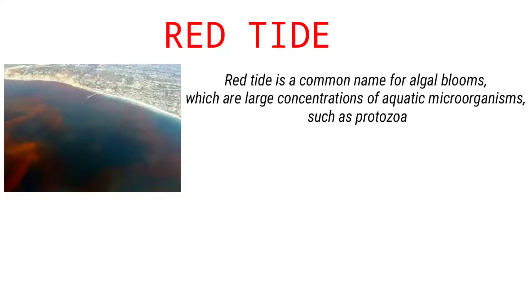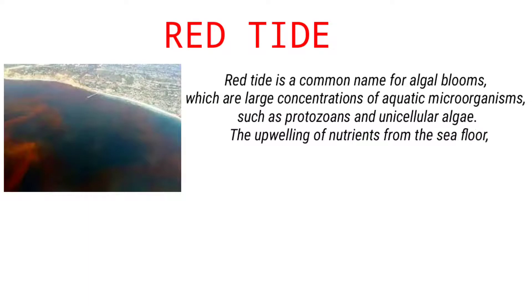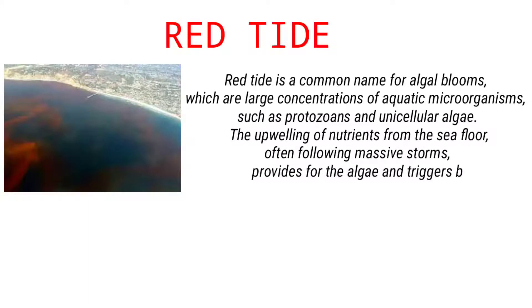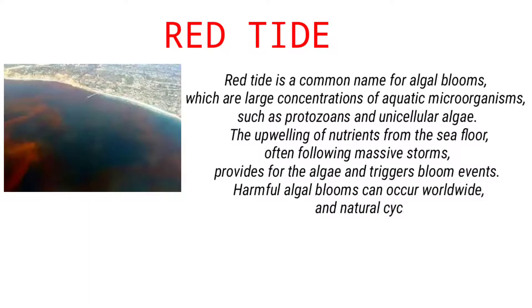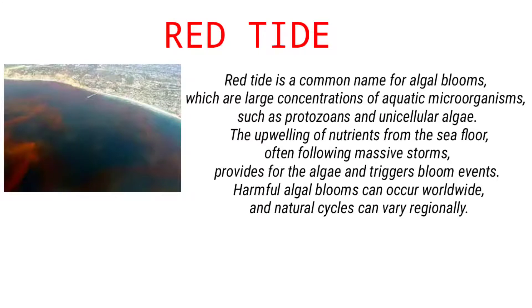The upwelling of nutrients from the seafloor, often following massive storms, provides for the algae and triggers bloom events. Harmful algal blooms can occur worldwide, and natural cycles can vary regionally.